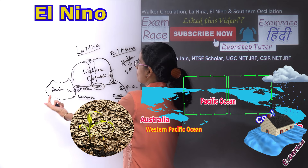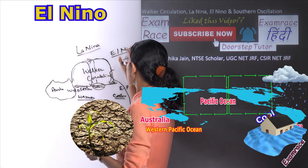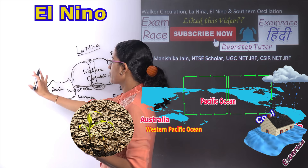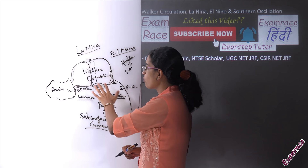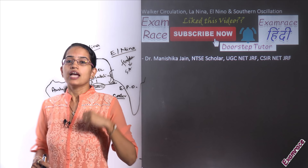Both El Niño and La Niña affect the Indian monsoon as well. Because of El Niño, you would have a weaker Indian monsoon, as more drought and dry conditions are seen towards the western Pacific Ocean, ultimately affecting the Indian monsoon system. Similarly, impacts are also seen in the Atlantic Ocean and in southern Australia, which will be discussed in a separate lecture.